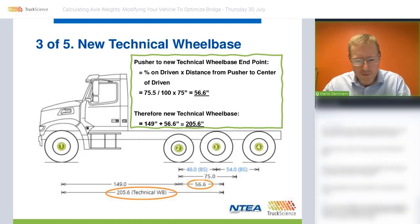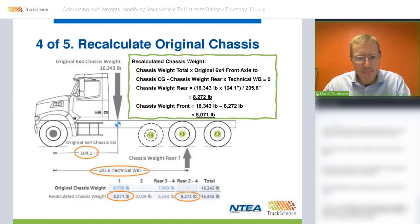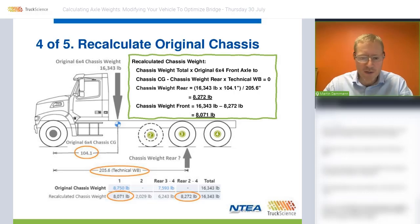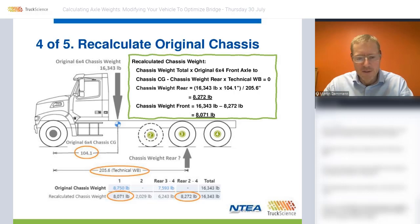This is probably one of the most important calculations when adding a pusher axle. In step four, we recalculate the original chassis weight over the front and rear. Remember in step one, we took note of the original chassis weight — 16,343 pounds — and its center of gravity in relation to the front axle at 104.1 inches. In this step, we calculate the redistribution of the original 6x4 chassis by applying the new technical wheelbase.